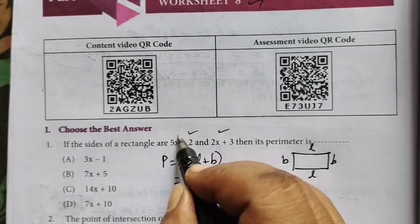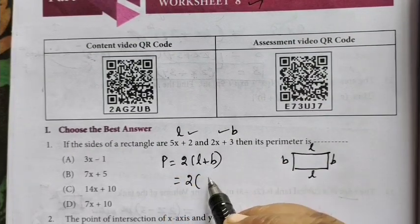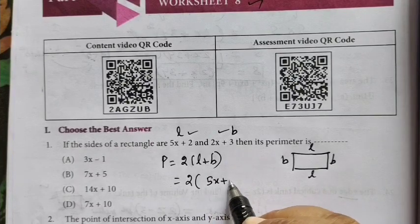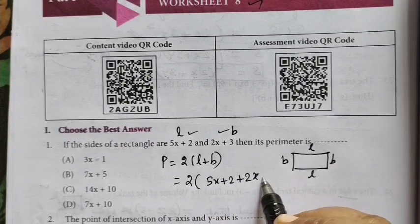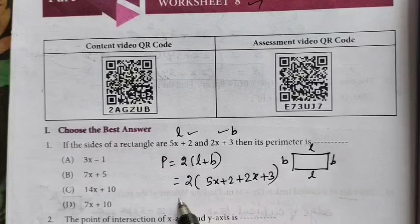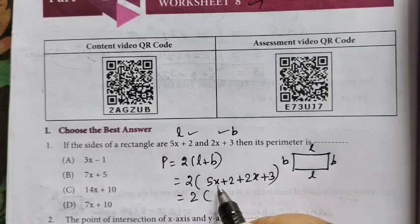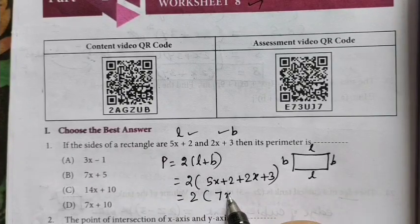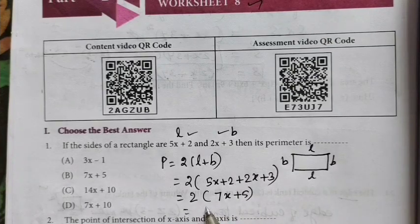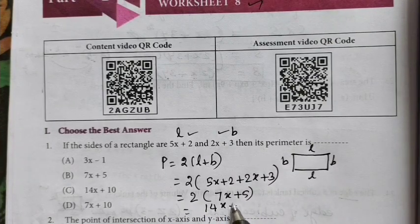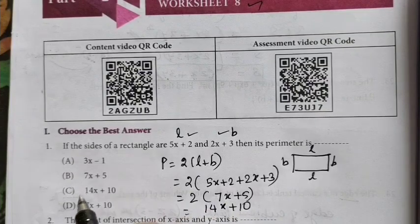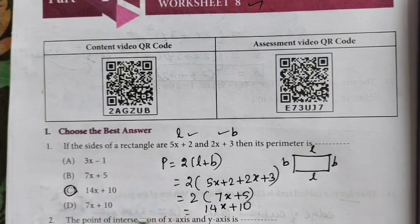L, this is L and this is B. 5x plus 2 plus 2x plus 3. Equal to 2 bracket. This is the correct answer.